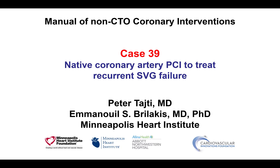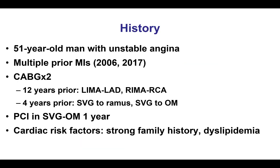This case illustrates treatment of a native coronary artery instead of the saphenous vein graft for recurrent SVG failure. The patient was a young man with multiple previous MIs and two previous cardiac surgeries: one 12 years prior with LIMA to LAD and RIMA to the right, and another surgery four years prior with vein graft to the RAMUS and vein graft to the obtuse marginal branch, which had been stented one year prior.